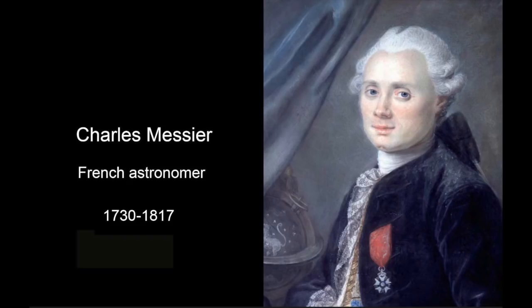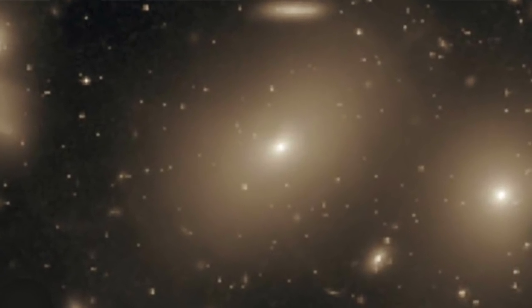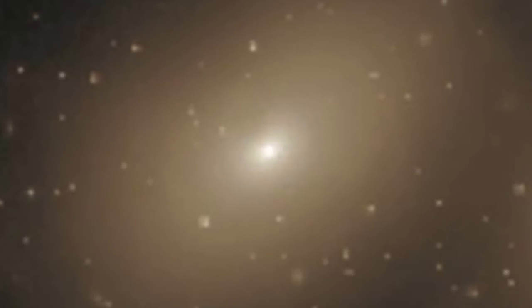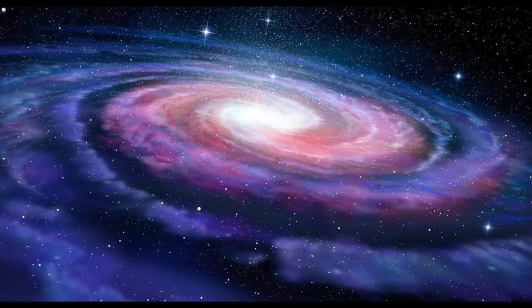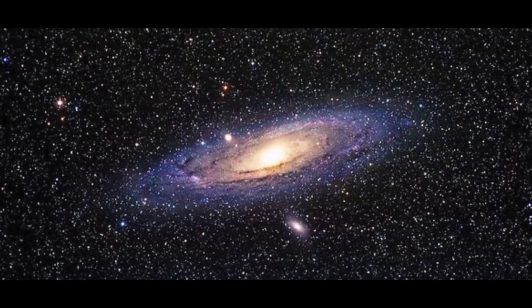The galaxy M87 was discovered in 1781 by the French astronomer Charles Messier. This elliptical spherical galaxy is located in the cluster Virgo, which is composed of 2000 galaxies. Our galaxy, the Milky Way, is composed of 200 million stars. The span is 300 million light years. M87 is bigger and heavier — its span is around a million light years, three times larger than our Milky Way.